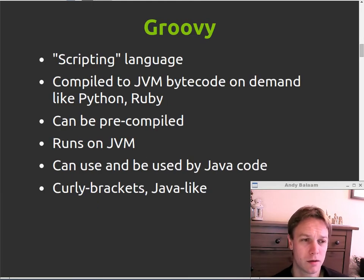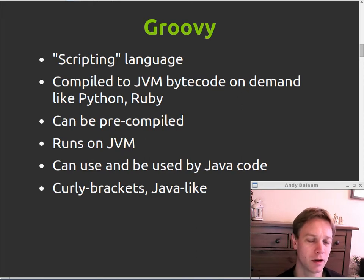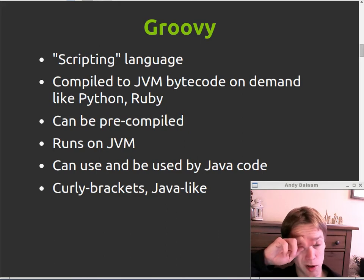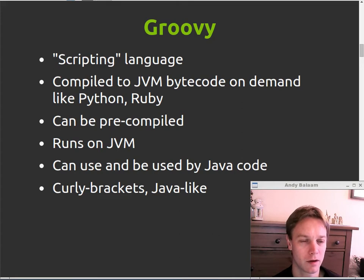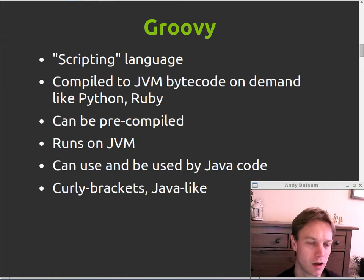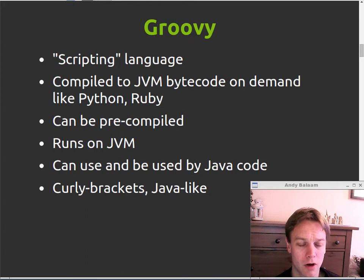So what is Groovy? Basically Groovy is a so-called scripting language that's built on top of Java, on top of the Java Virtual Machine. So anywhere that you can run Java, you should be able to run Groovy code. What happens is the code gets compiled down to bytecode in the same way that Java code does, but it gets compiled when you run the program. So just like with a Python or a Ruby program, you just say Groovy and then the name of your Groovy program — at that moment it gets compiled into bytecode and run on the JVM. There's no separate compile step, but you can do a separate compile step if you want and pre-compile it. In your Groovy program you can use Java code, and Java code can call into your Groovy code, so it nestles very closely in with Java.